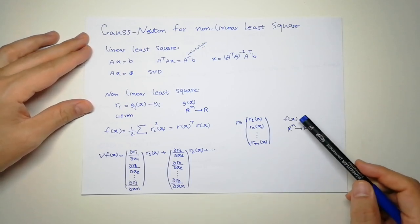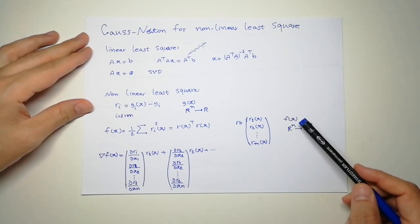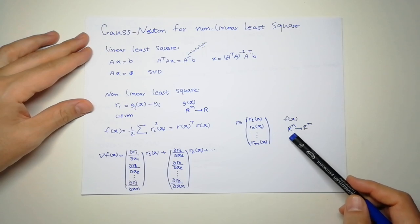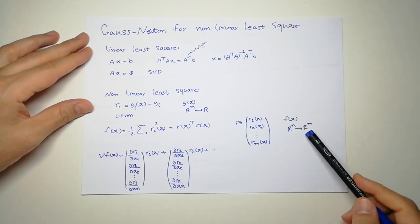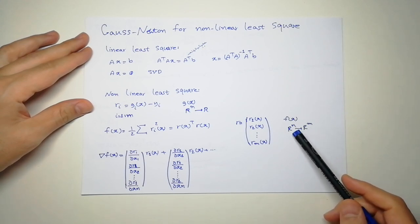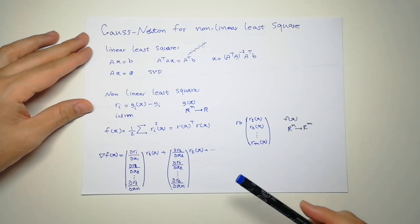So now F gets X which has N dimensions and maps it to R^M. It's mapping from N to M.